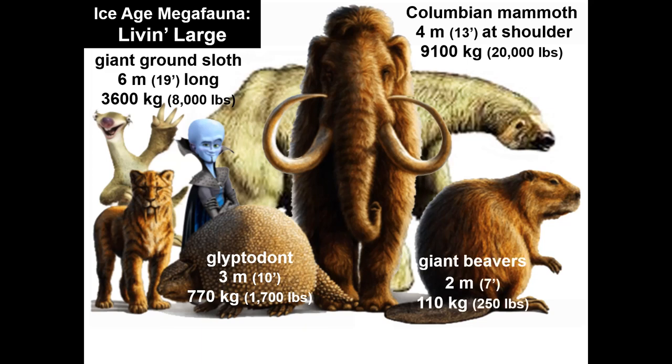Giant beavers: there are actually two different giant beaver lineages in North America — convergent forms. They lived quite differently from the modern bark-chewing, dam-building beaver. The giant beavers did something different — but that's another talk.